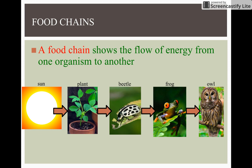A food chain shows the flow of energy from one organism to another. We have the sun, which is the energy source for everything — always remember that. The main producer in any ecosystem is always the sun. A plant gets energy from the sun, a beetle gets energy from the plant, a frog gets energy from the beetle, and the owl gets energy from the frog.